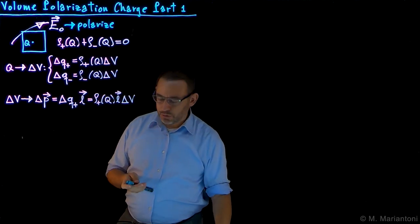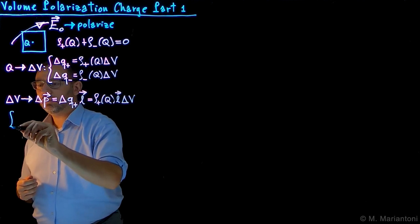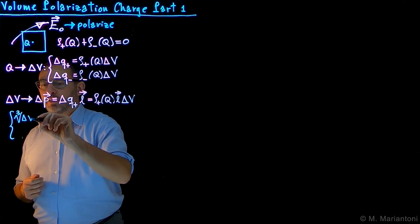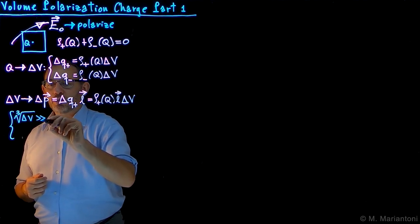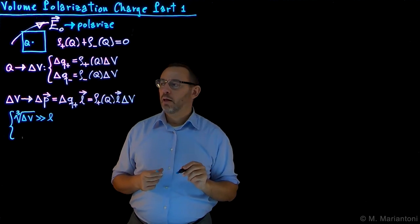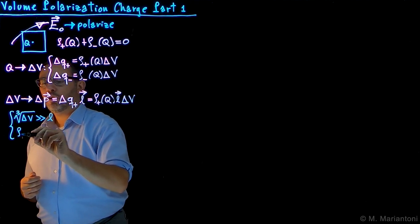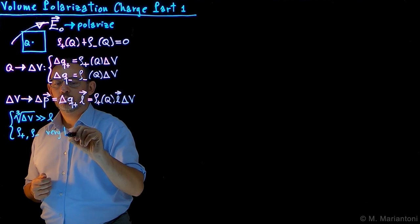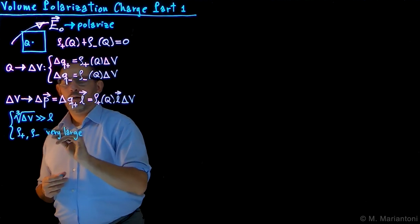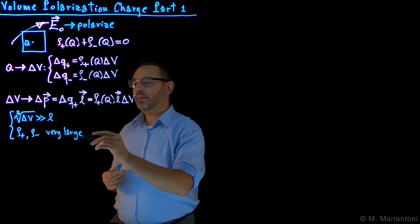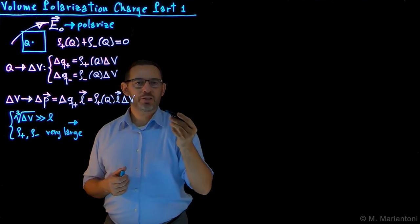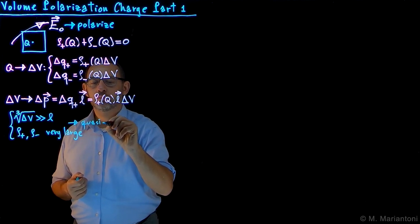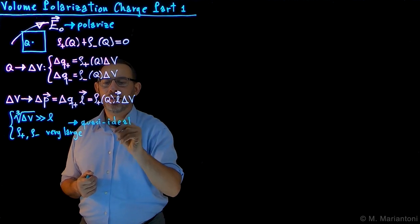From the physics of the problem, we know that the cubic root of capital delta V is much larger than the norm of L. At the same time, rho_plus as well as rho_minus are very large — that is, their product is constant. So we are considering an Avogadro-number set of quasi-ideal electric dipoles.